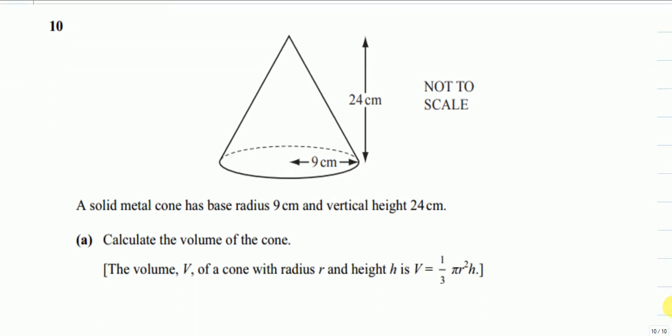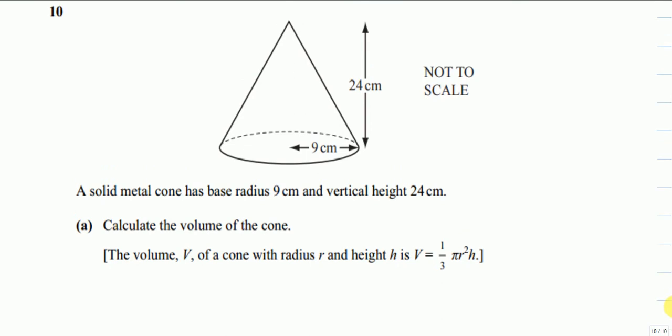In part a, we are given a solid metal cone with base radius 9 cm and vertical height 24 cm. We have to calculate the volume, and they've nicely provided the equation required.